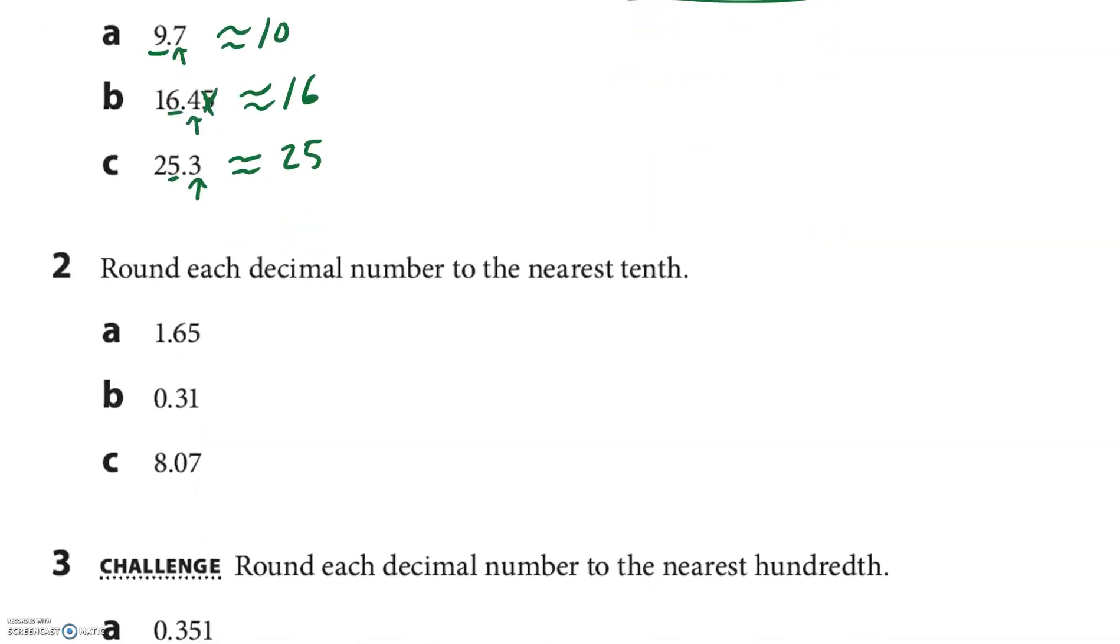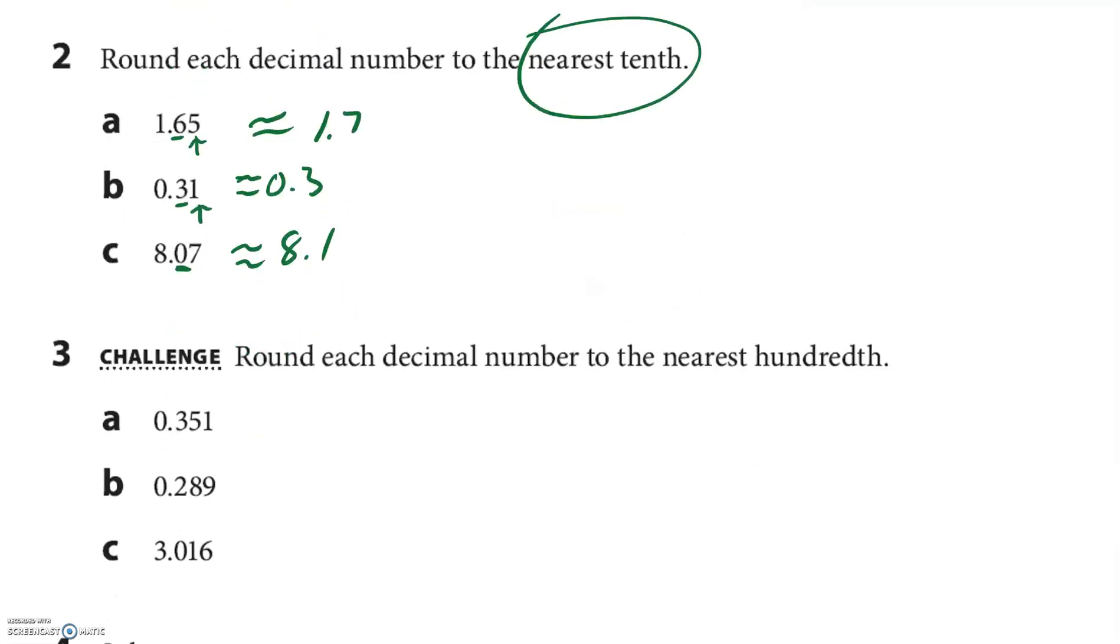Okay, nearest 10th. So now I'm looking in the 10th place. There's all my 10ths. So let's look at the first one. There's a 5 next to it, so that's going to say, instead of 16 tenths, it's going to be 17 tenths because of that 5. So it's going to be 17 tenths or 1 and 7 tenths. Now I'm going to look at this 1. Well, that's less than 5, so it's going to be 3 tenths. And then this 0 is going to be a 0 or a 1. There's a 7 next to it, so it's going to go up, and so it's going to be 8 and 1 tenth.